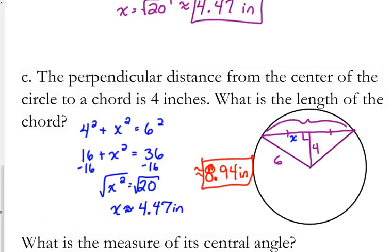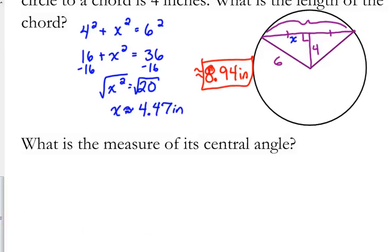Last question here on this one. What is the measure of its central angle? So we've done this before. I'm going to just isolate my right triangle so we can focus on just this part of it. We know the radius is 6, we know that the perpendicular distance is 4. We're trying to find this angle right here.